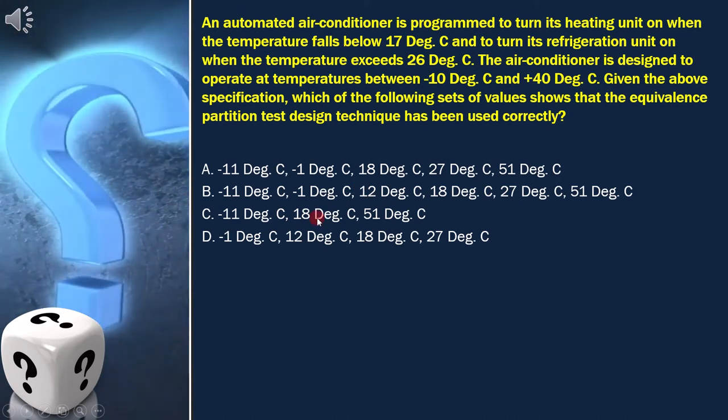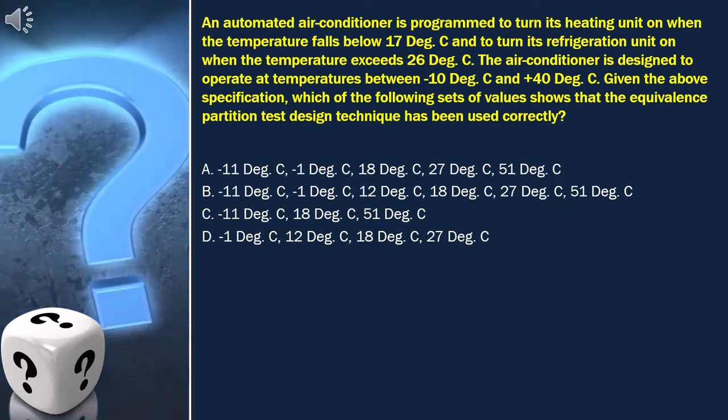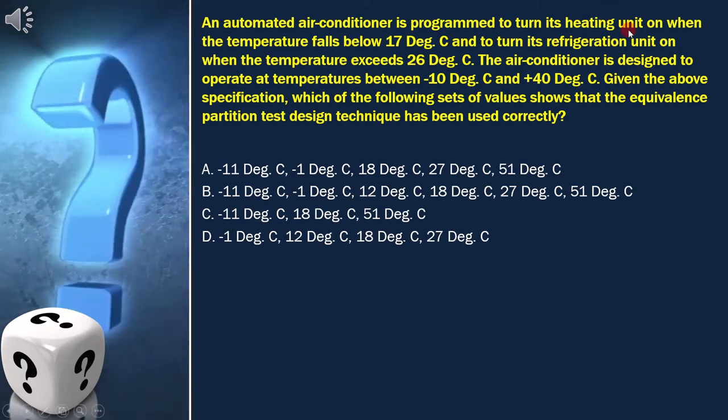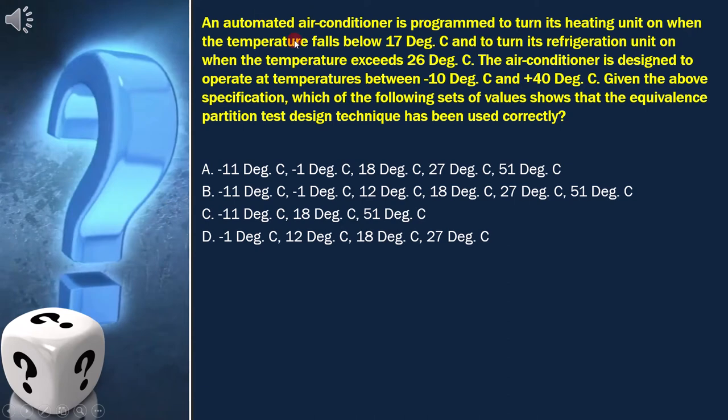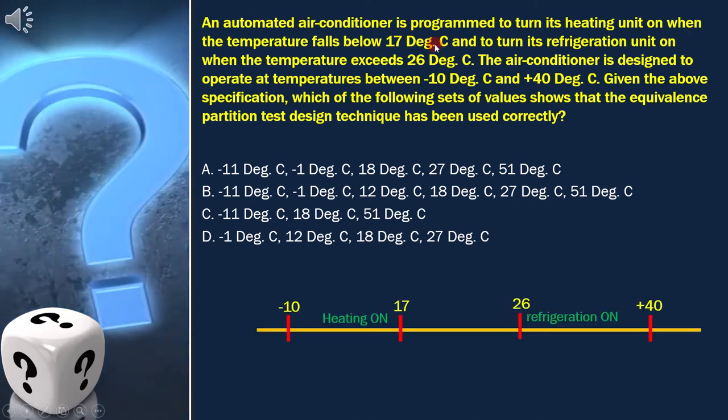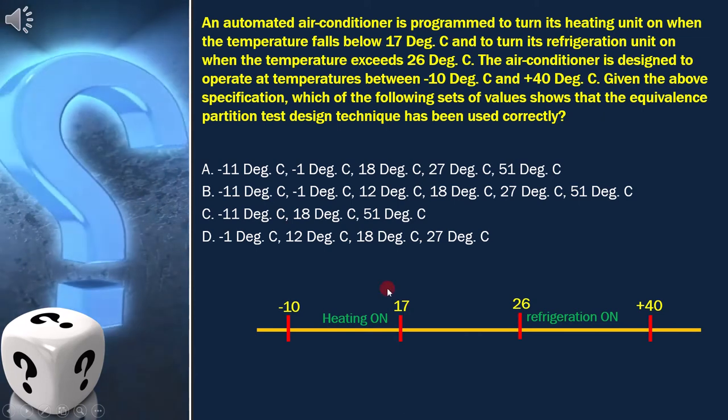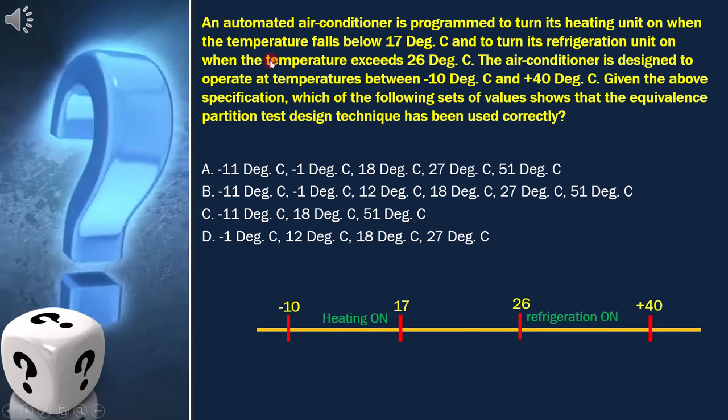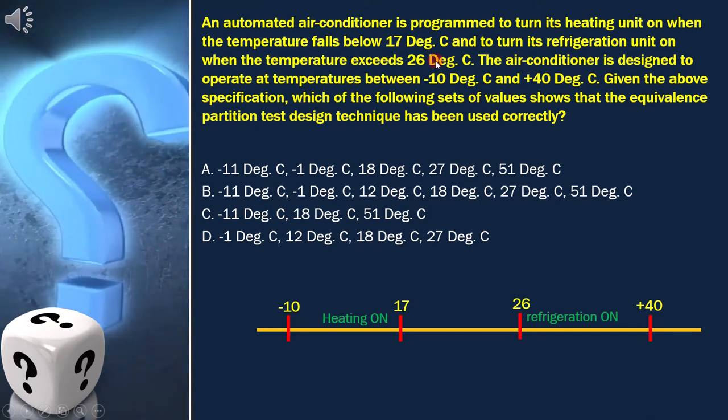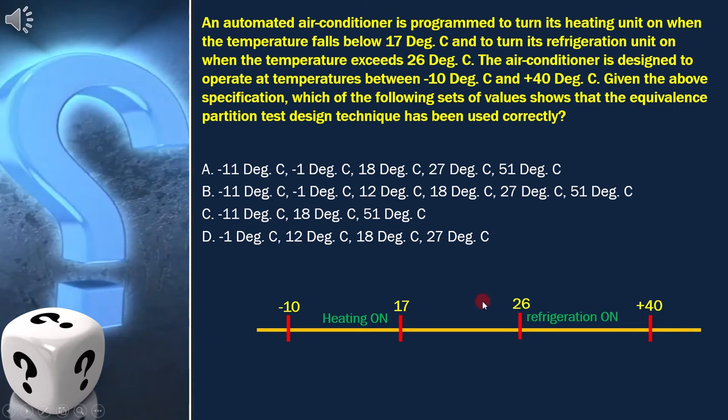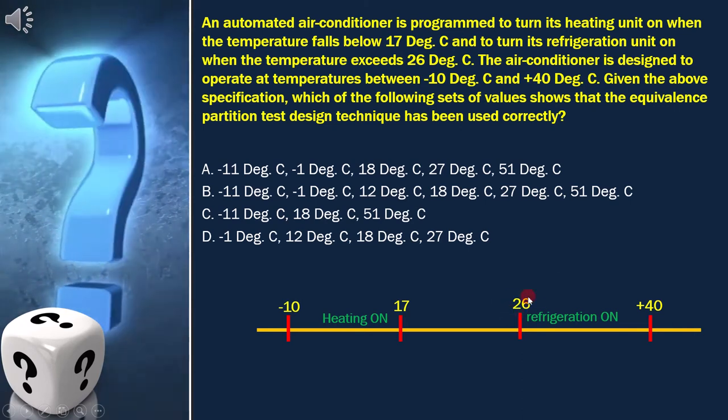Let's draw the equivalence classes diagram to get the answer. As per the question, its heating unit turns on when the temperature falls below 17 degrees, which means that 17 is one of the boundaries. As per the question, refrigeration unit turns on when the temperature exceeds 26 degrees, which means that 26 is one of the boundaries.